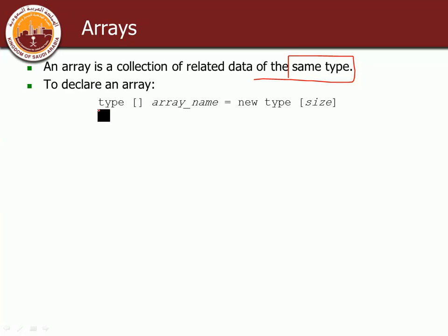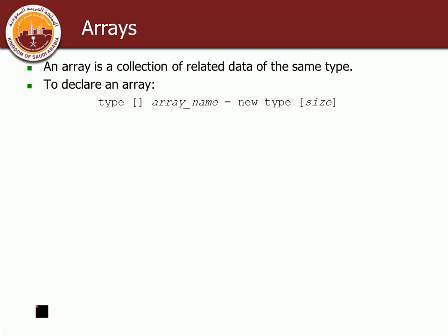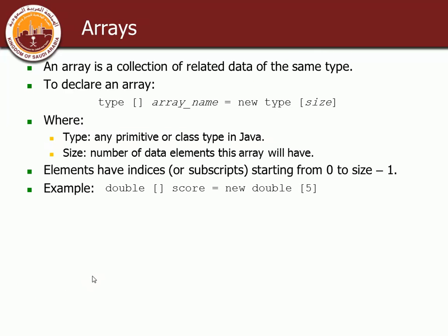To declare an array, you choose a type — double, int, whatever — then put square brackets, then give the array a name. Then you put an equal sign followed by 'new', the same data type, and between brackets the size — how many boxes you want inside. For example: double[] score = new double[5].